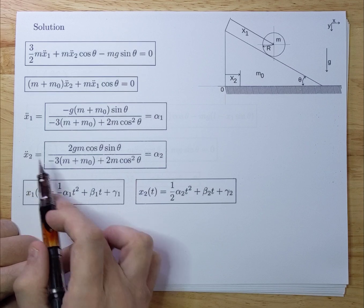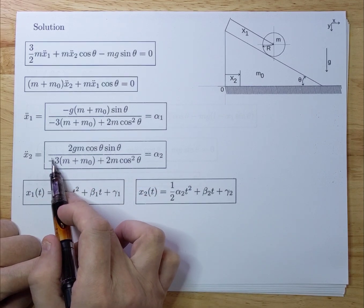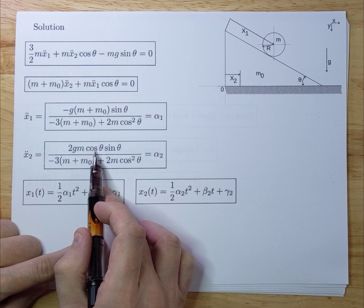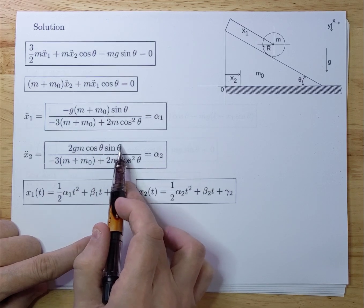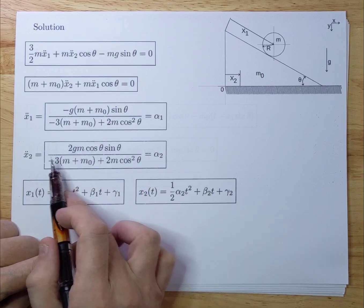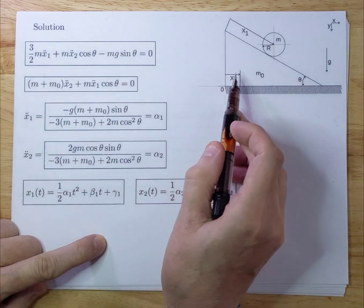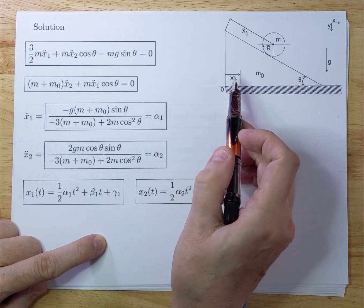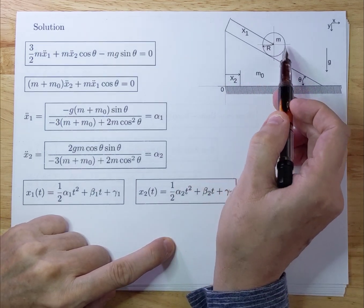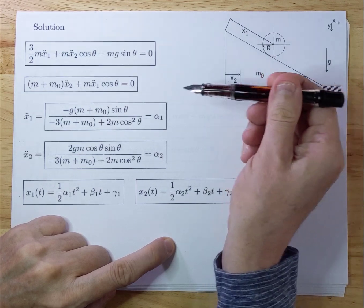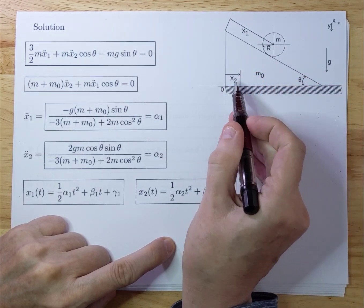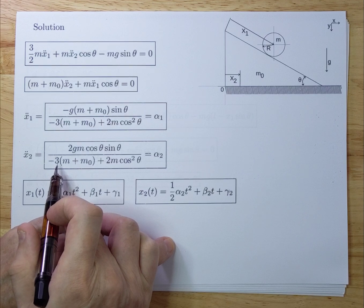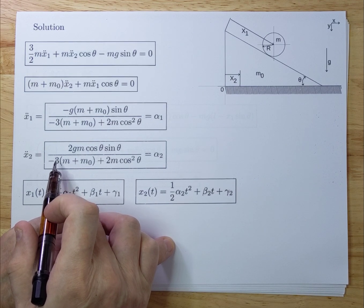Now for x2: the numerator is negative (negative times positive sine and cosine), and the denominator is again negative, giving a total negative number. So the acceleration is negative — meaning the wedge goes the opposite direction from what we assumed. That makes total sense because the rolling disc is essentially pushing the wedge in that direction. We could have assumed the other direction initially and gotten a positive result, but either way it works out correctly.